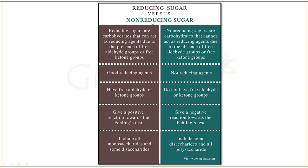Now, reducing sugar versus non-reducing sugar. Reducing sugars are carbohydrates that act as reducing agents due to the presence of a free aldehyde or ketone group. They give a positive reaction in Fehling's test and include all monosaccharides and some disaccharides. Non-reducing sugars cannot act as reducing agents because the aldehyde or ketone group is involved in glycosidic bond formation — they give a negative Fehling's test result and include some disaccharides and all polysaccharides.